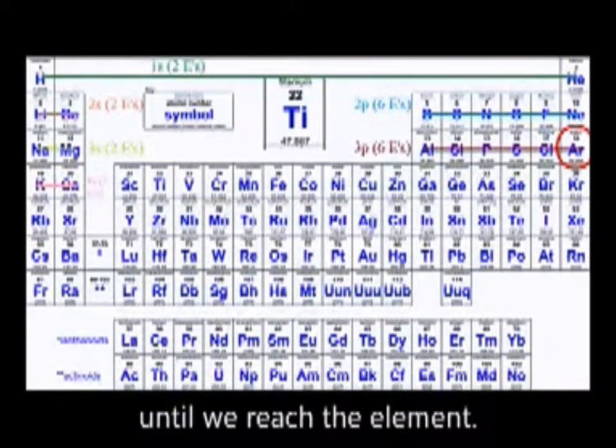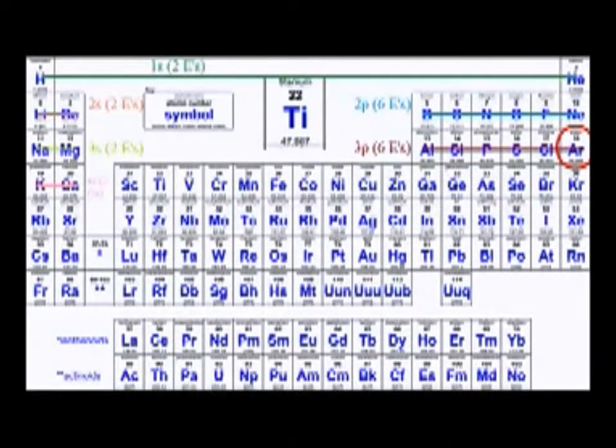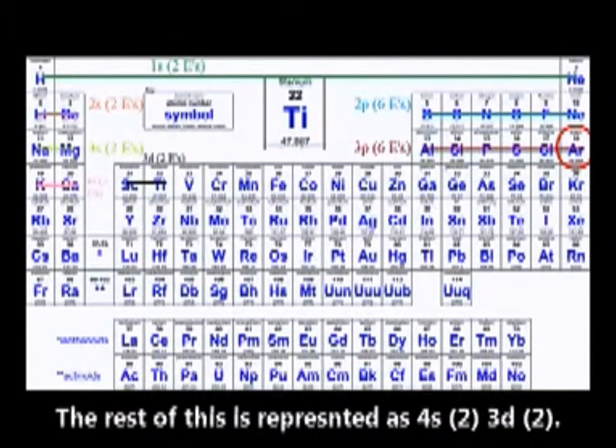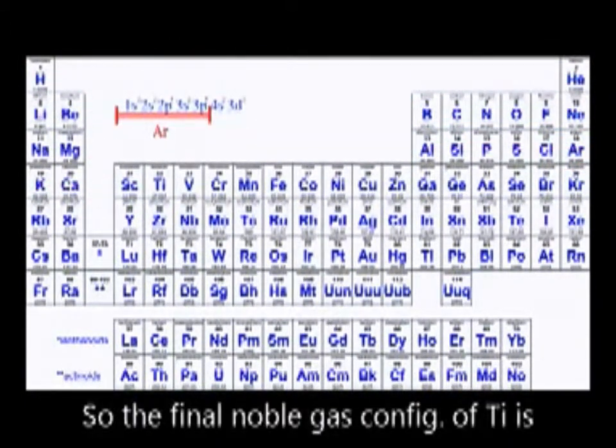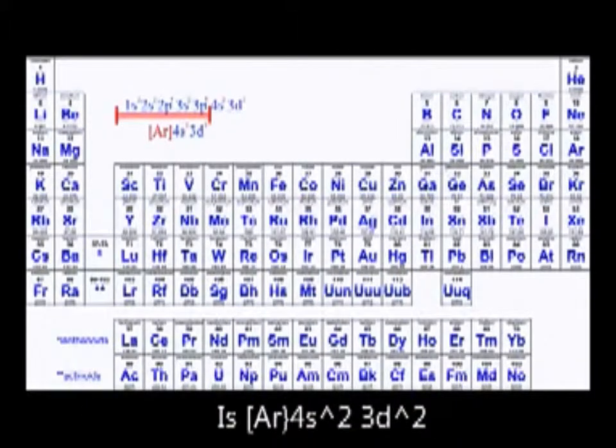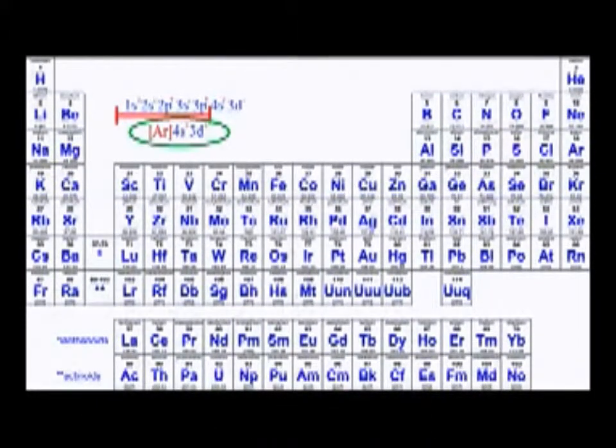And then we go along the fourth period until we reach the element. The rest of this is represented as 4s2, 3d2. So the final noble gas configuration of titanium is argon, 4s2, 3d2.